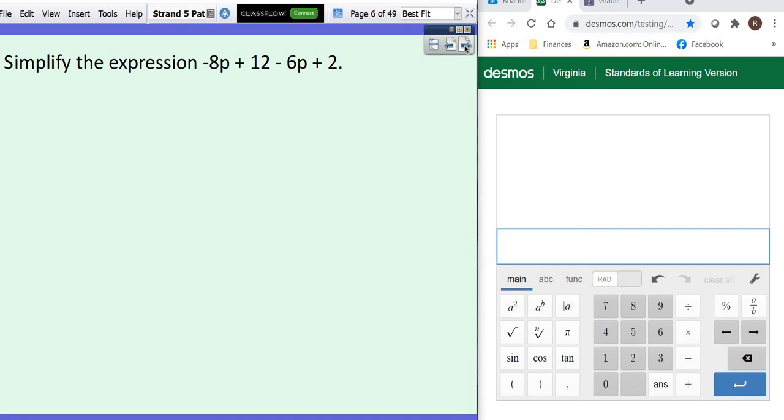All right, next one. It says simplify the expression. There are no parentheses. So that means I'm going to put together my families. There's a p and there's a p and there's a number and there's a number.